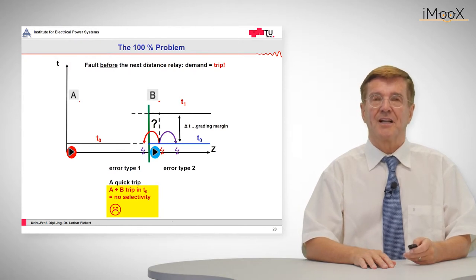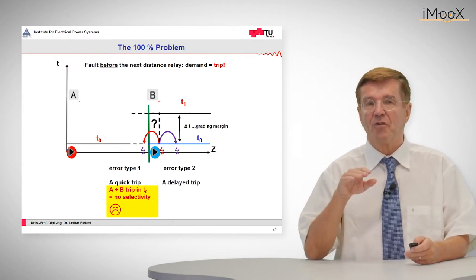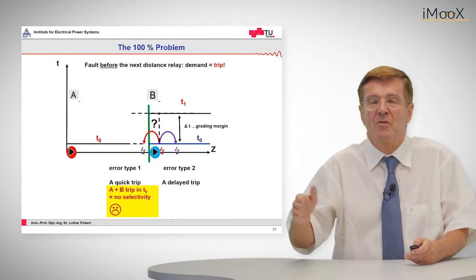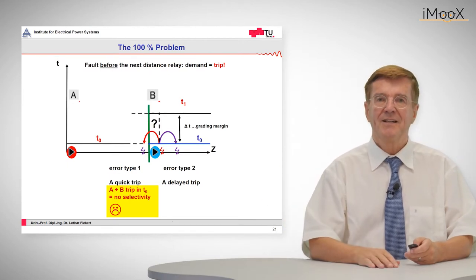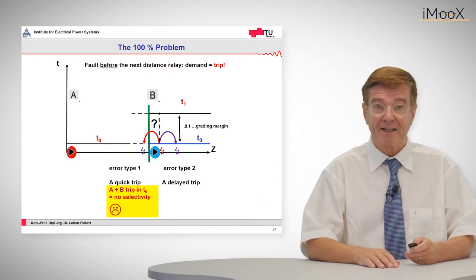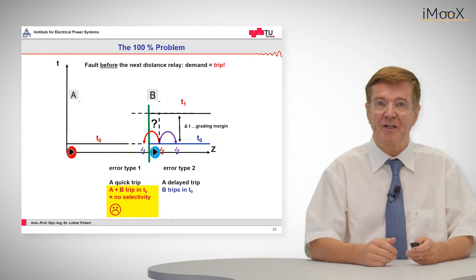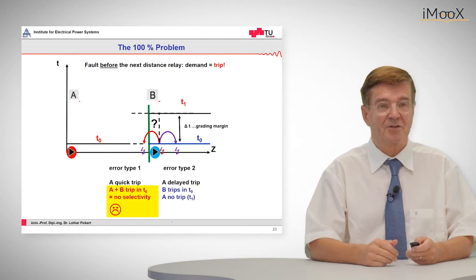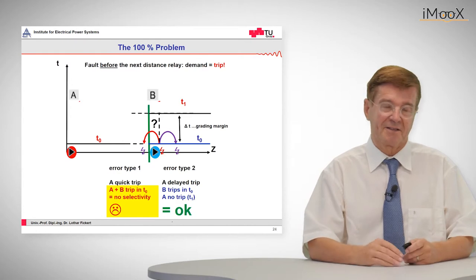The situation for error type 2, that means that the fault apparently moves away from relay A, will start relay A. B will trip before anything else happens. So A will not trip. We have a trip at B and that is okay.